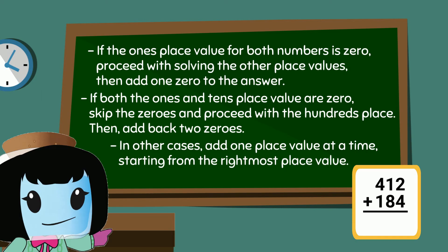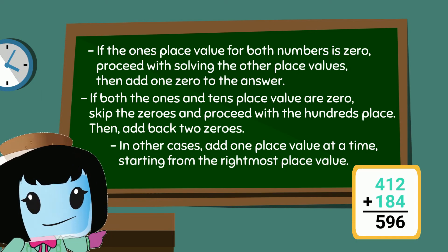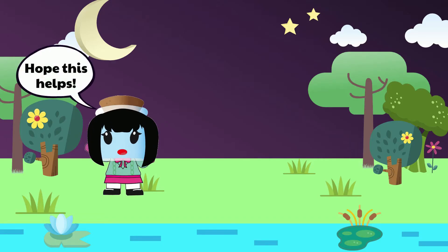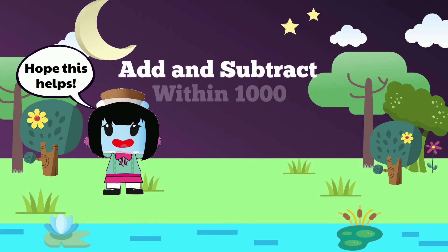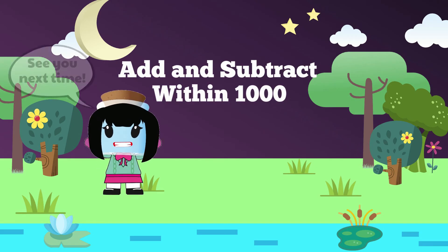In other cases, add one place value at a time, starting from the right-most place value. I hope this helped you practice how to add and subtract within a thousand. See you next time!